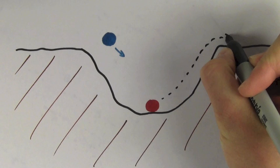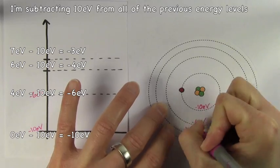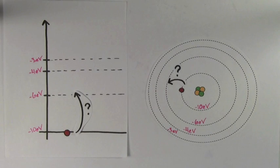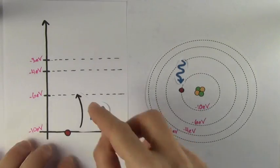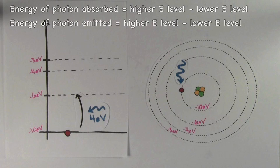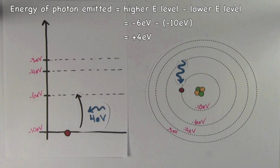To make our hypothetical atom a little more realistic, let's subtract 10 eV from each energy level. This doesn't really change anything — to get from the negative 10 eV ground state to the negative 6 eV first excited state, it still takes a 4 eV photon. People do get confused with the negative signs, so be careful. To find the energy of the photon absorbed or emitted, always take the higher energy level and subtract the lower energy level. So we take negative 6 eV minus negative 10 eV, giving us 4 eV — the photon needed to excite the electron, and also the photon emitted when it falls back down.